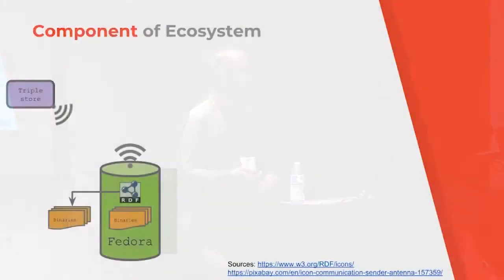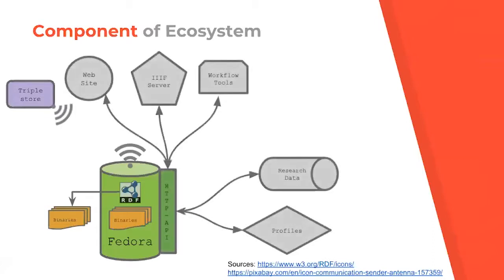There are applications we've integrated like Apache Camel that let us grab onto these messages that Fedora emits and then send them off to external services like triple stores or external Solr indexes. Of course the API is another main way of integrating — you can integrate off the messages but you can also integrate against the API. You can think of Samvera certainly as a kind of website-level integration, but there are many things you might want to integrate with Fedora through the API: a IIIF image server, workflow tools like Archivematica, research data workflows, or a Vivo integration for connecting researcher profiles to datasets in Fedora.